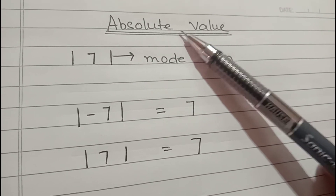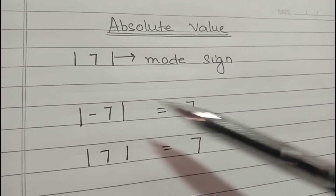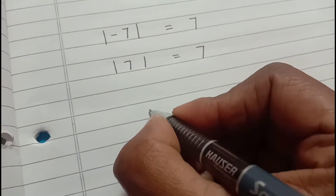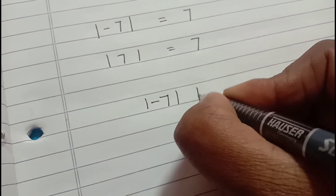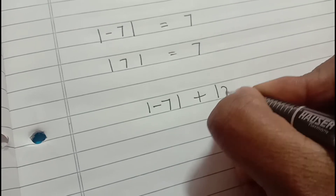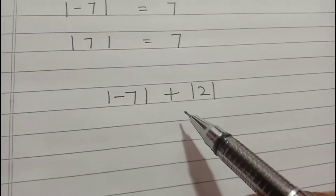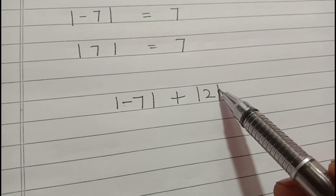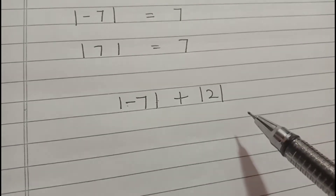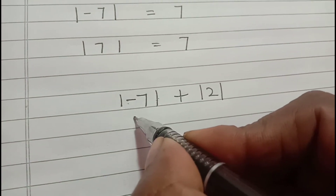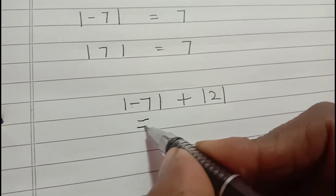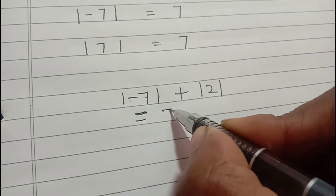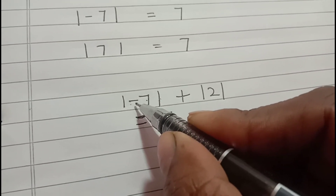The absolute value of any integer means you overlook the sign. Now if I have |-7| + |2|, if I have this question — these mod signs mean they are asking for the absolute value. So minus seven will become seven, plus two will become two, which gives nine.